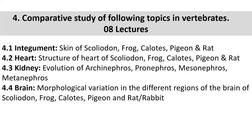You are going to learn the integument - the skin system. Each class has a different type of skin. For example, the skin of Scoliodon, skin of Frog, skin of Calotes, skin of Pigeon, and skin of Rat are all to be studied. Scoliodon belongs to Pisces, Frog belongs to Amphibia, Calotes belongs to Reptilia, Pigeon belongs to Aves, and Rat belongs to Mammalia. Every representative example is included.